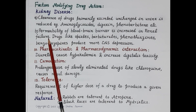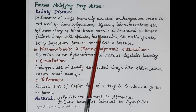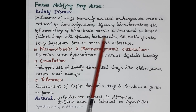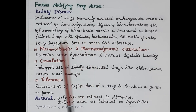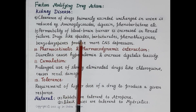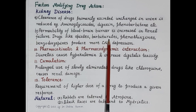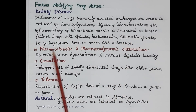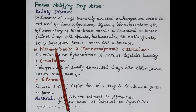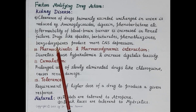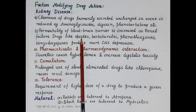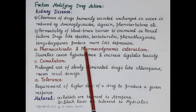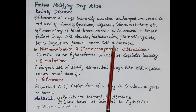Because the permeability of the blood-brain barrier is increased in renal failure, drugs like opiates, barbiturates, phenothiazines, and benzodiazepines easily cross the blood-brain barrier, producing more central nervous system depression.